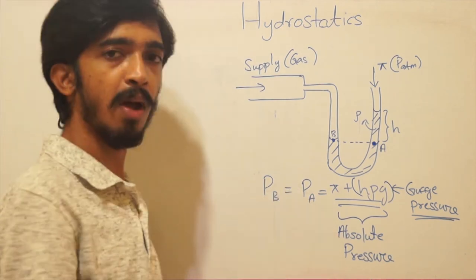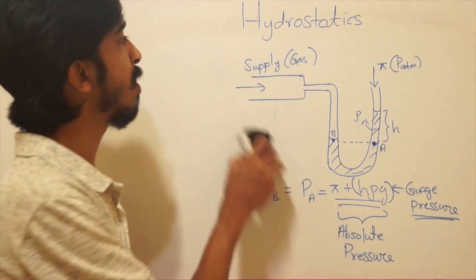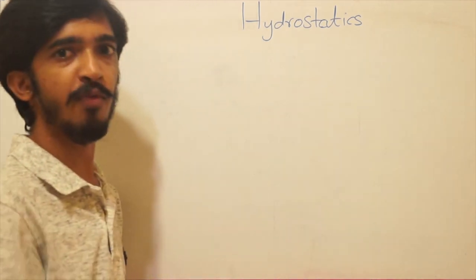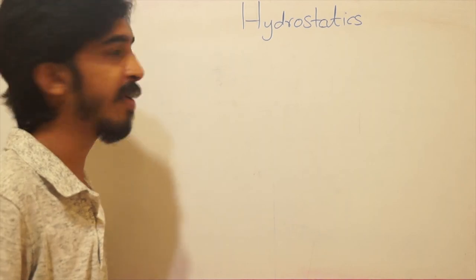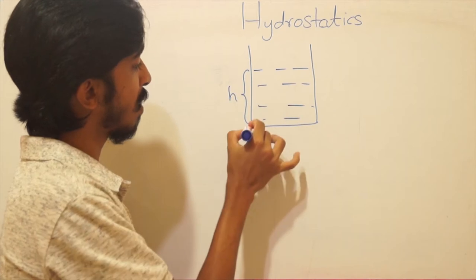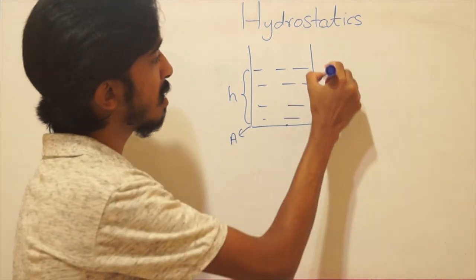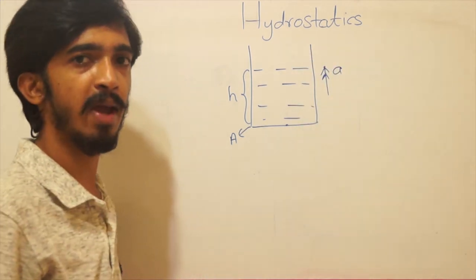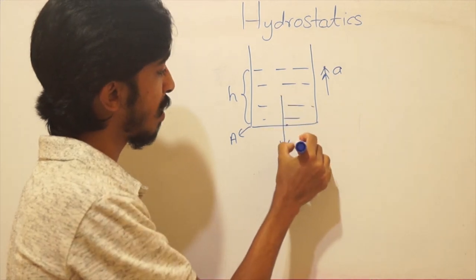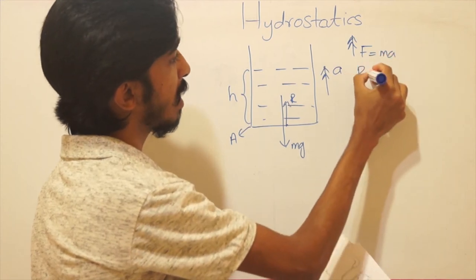We've seen how to find pressure in a container at rest. Now consider a container on a lift — the liquid is still static relative to the container, but the whole system is moving. If the container has liquid of height h and base area A and is moving upward in a lift at acceleration a, what is the pressure at the bottom? There will be weight mg acting downward and a reaction R upward.